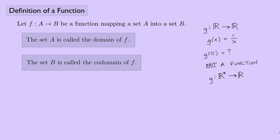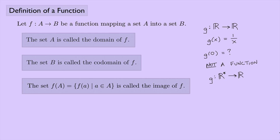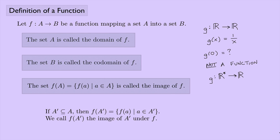Next we have the codomain, which is just the set B. The set f(A) consists of all the values f(a) where a is an element of A — that's called the image of F. One more thing: if we have a subset of A called A′, then f(A′) is the set of all f(a) such that a is an element of A′. In that case we say f(A′) is the image of A′ under F.